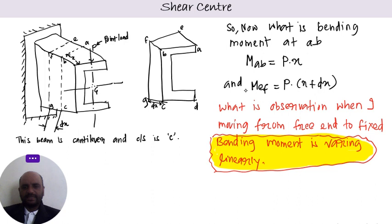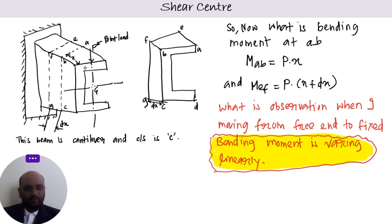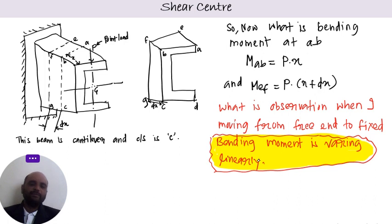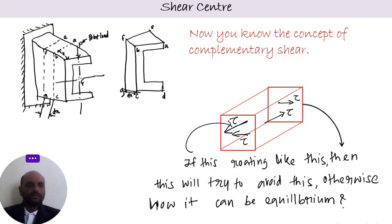At section EF, the bending moment is P(x + dx) — the bending moment increases as you move from the free end toward the fixed end. The bending moment varies linearly. This is a very important point: because the bending moment is varying, there will definitely be shear stresses developed.